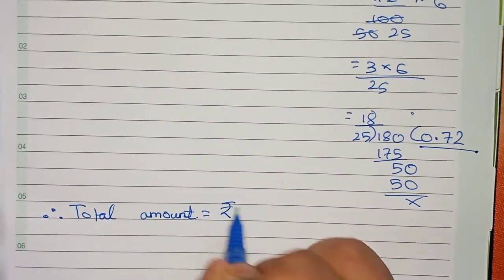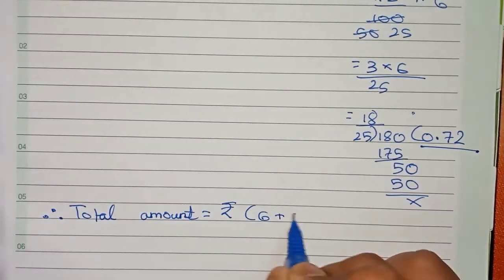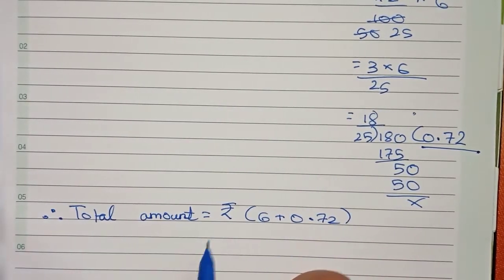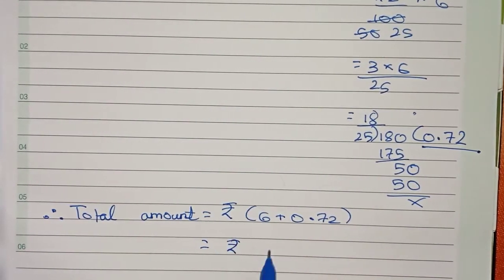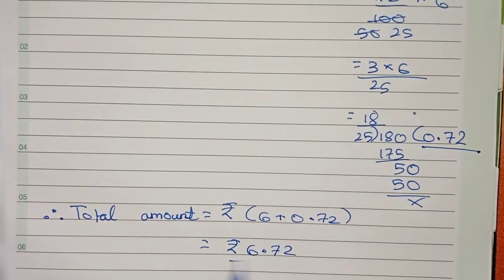So therefore the total amount, that will be rupees 6 plus 0.72, which will be rupees 6.72.